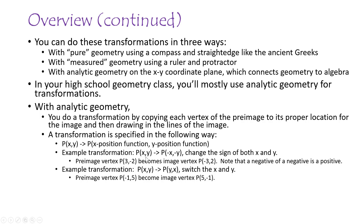Here are some examples. In this first one, for any point in the pre-image, all you do for the image is change the sign of the X and the Y. So if we have the point (3, -2), it would become (-3, 2) — the negative 2 becomes 2 because the negative of a negative is positive. Another example transformation is you switch the X and the Y, so the point (-1, 5) would become (5, -1).